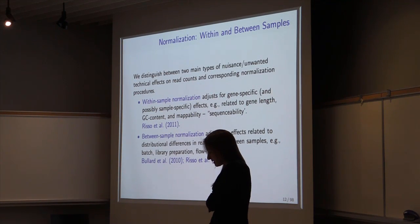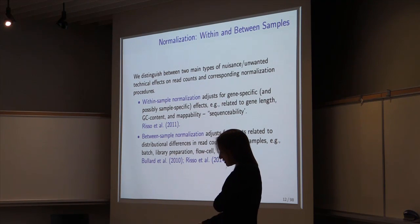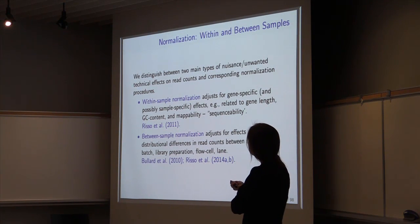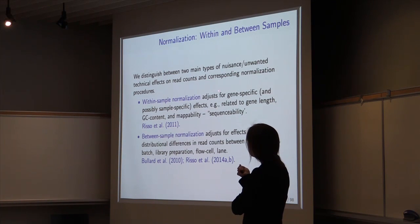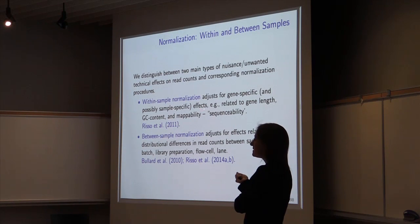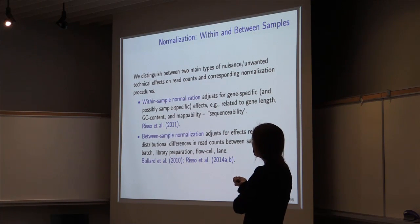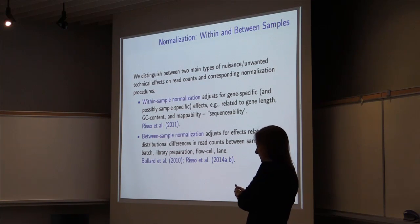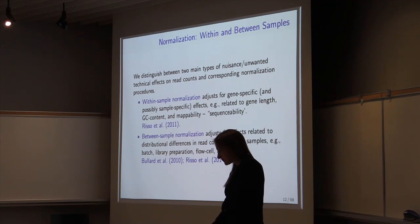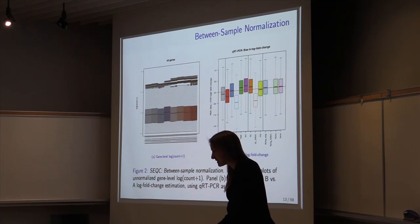We distinguish between two types of normalization: within-sample and between-sample normalization. Within-sample normalization adjusts for gene-specific effects related to GC content or mappability. Between-sample normalization adjusts for effects related to distributional differences in read counts between samples, like batch, library preparation, flow cell effects, and other complex effects.